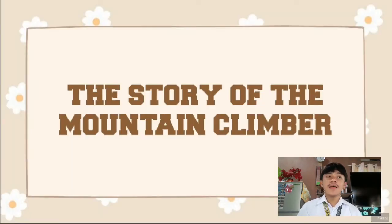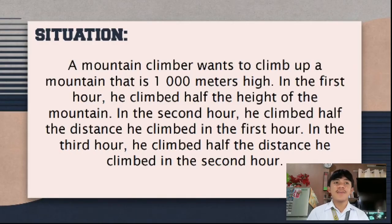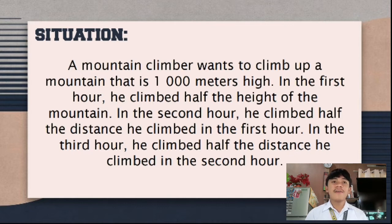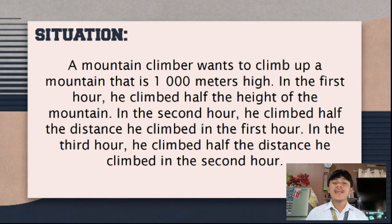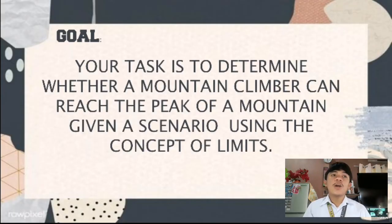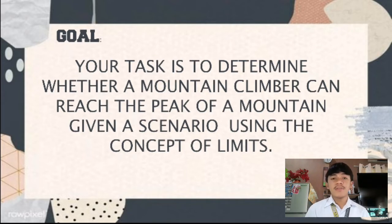The presentation is all about the story of the mountain climber. This is the situation given: a mountain climber wants to climb up a mountain that is 1,000 meters high. In the first round, he climbed half the height of the mountain. In the second round, he climbed half the distance he climbed in the first round. And in the third round, he climbed half the distance he climbed in the second round. The goal or task for this presentation is to determine whether a mountain climber can reach the peak of a mountain given this scenario using the concept of limits.